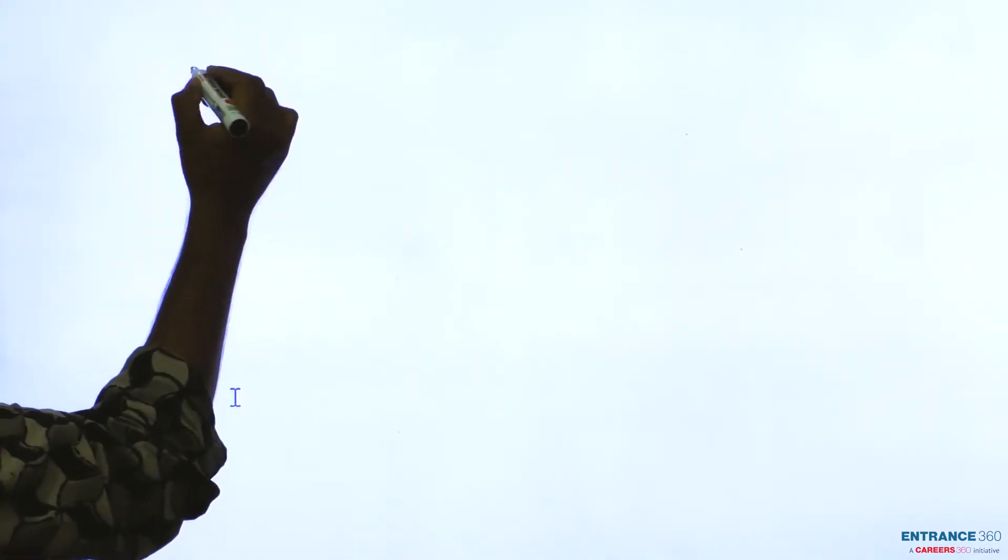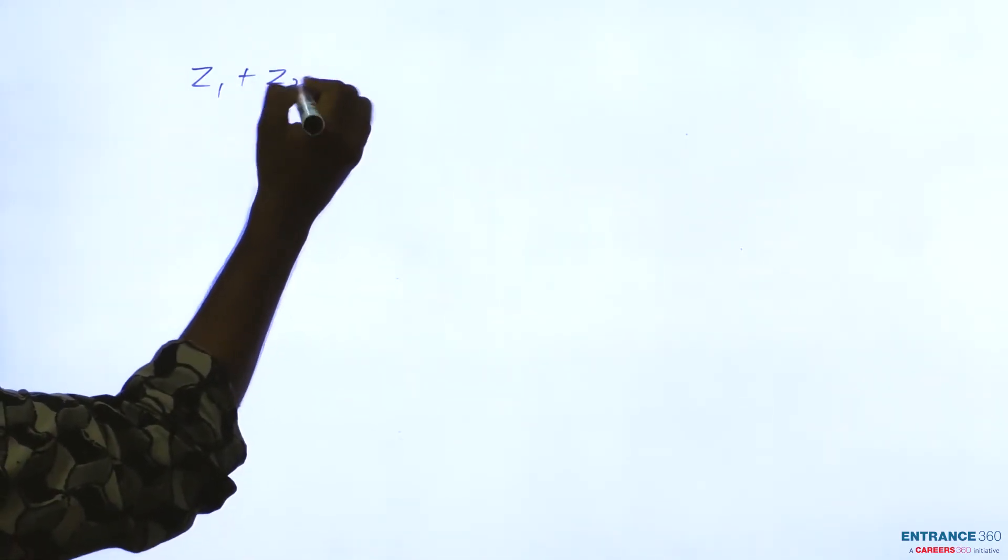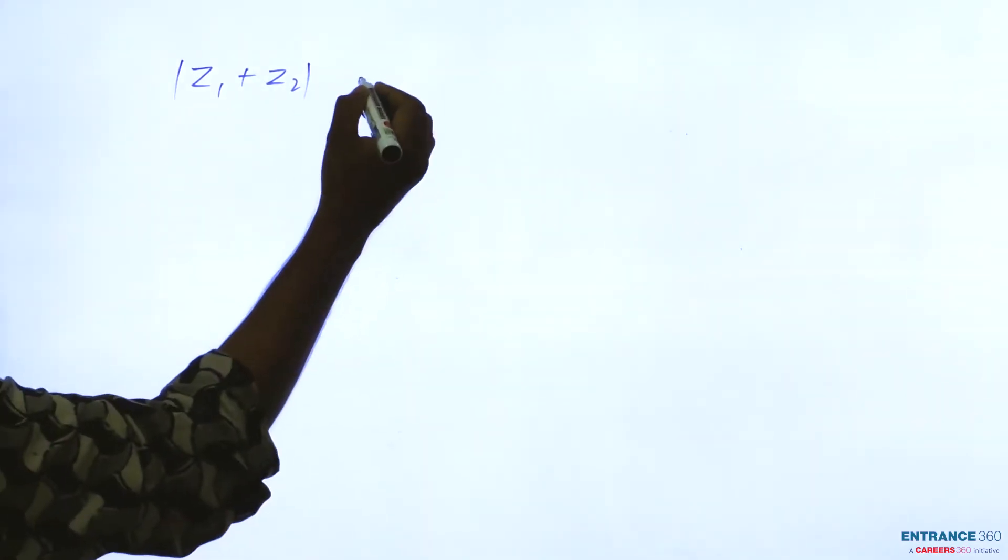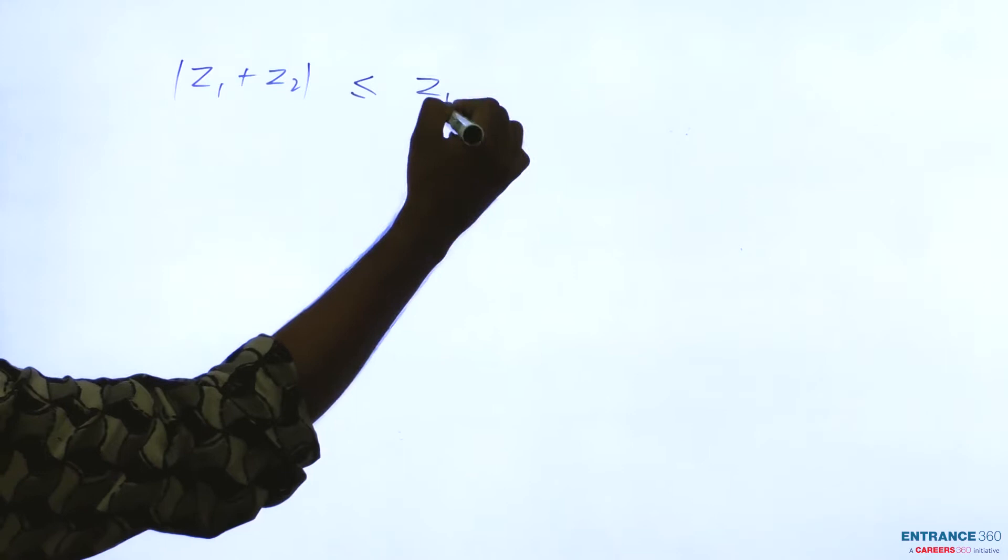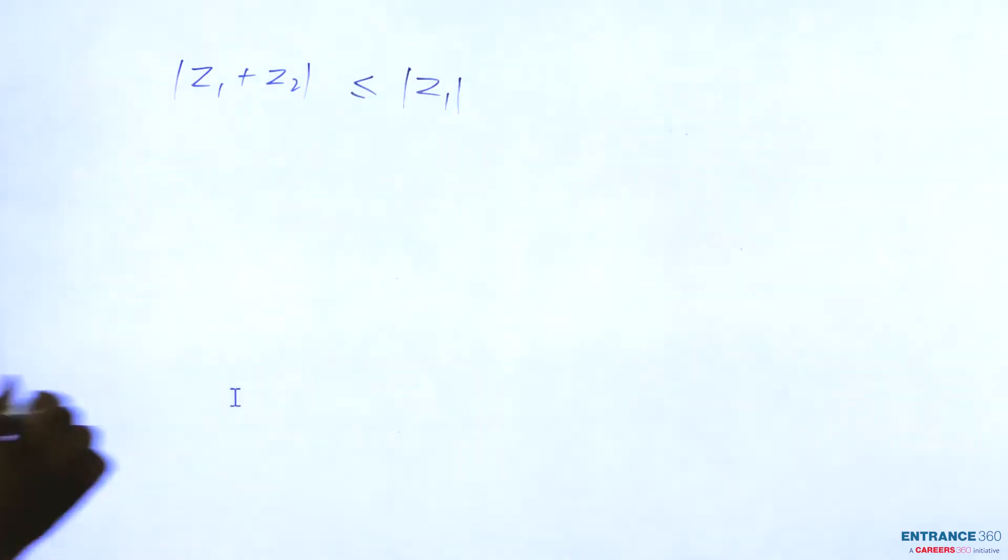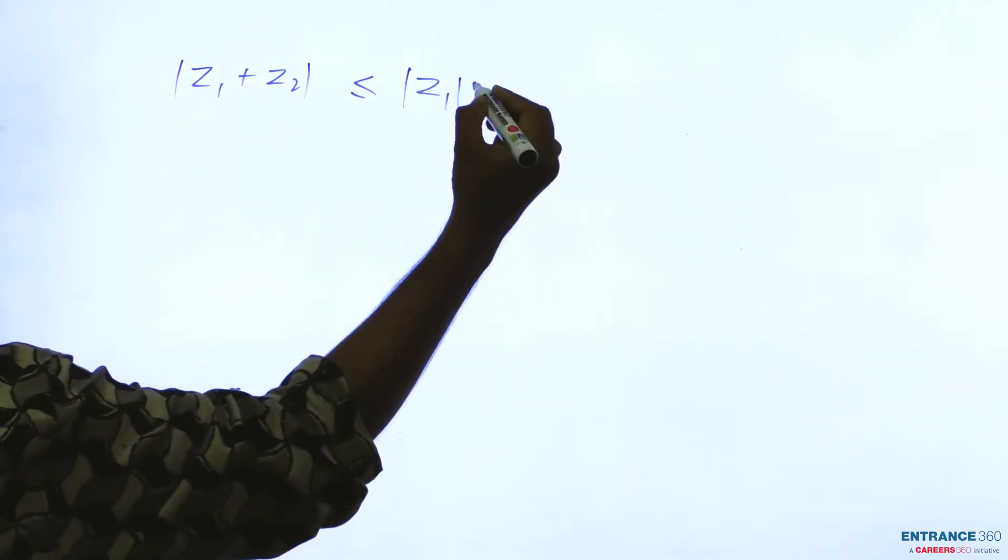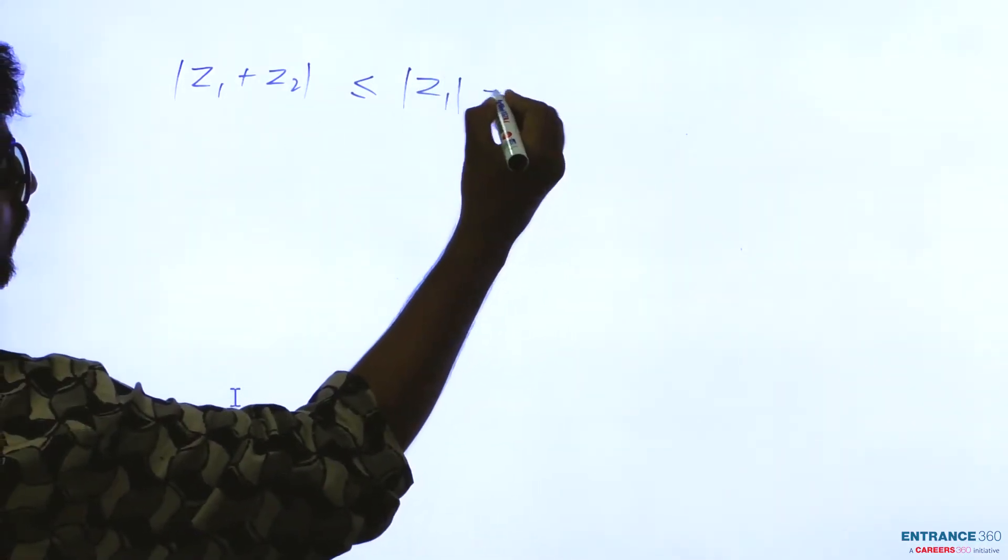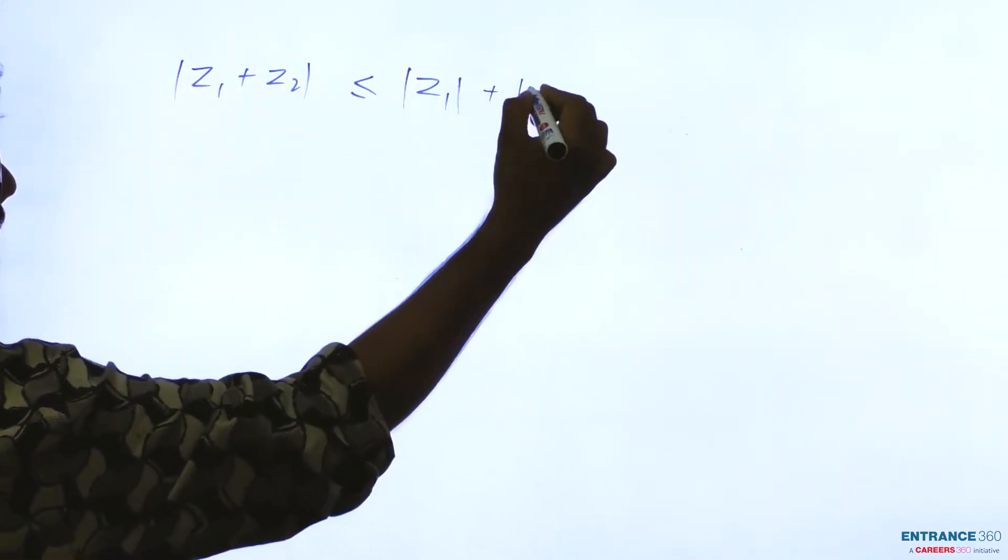As you know, for z1 plus z2, mod of z1 plus z2 by the triangle law of inequality is less than equal to mod z1 plus mod z2.